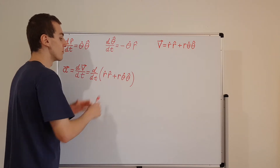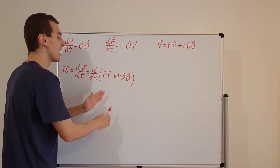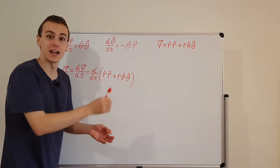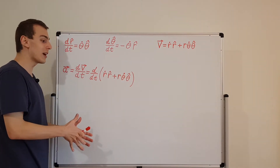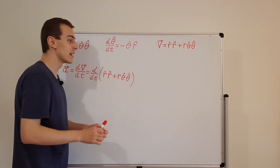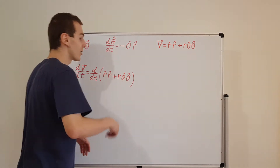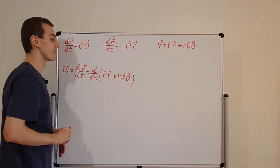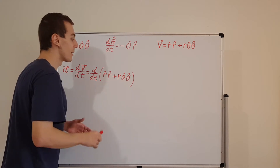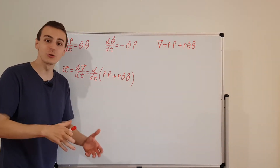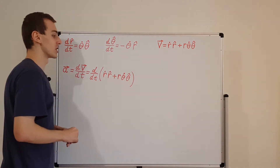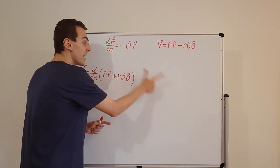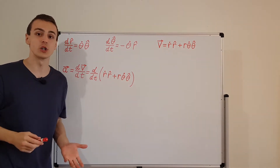Now, everything in this expression depends on time. r and theta are the coordinates and can depend on time. If we're mapping out the trajectory of a particle with polar coordinates, r and theta could be changing, so r-dot and theta-dot could also be changing. And the unit vectors also depend on time because they depend on the angle — if the angle changes as a result of time changing, the unit vectors are also going to change direction. They move with the particle, and the tangential direction depends on the angle of the particle relative to the origin.